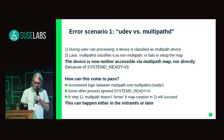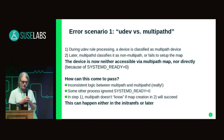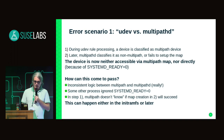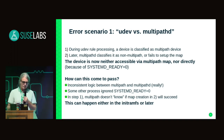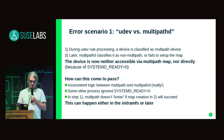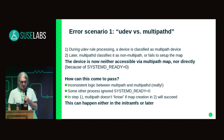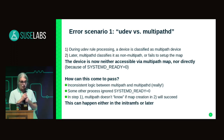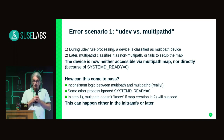That leads us to the error scenarios. Scenario one: UDEV versus multipathd. In the first step, UDEV rule processing, a device is classified as a multipath device. But later, multipathd classifies the device differently as non-multipath. Or it has the same opinion about the device, it tries to set it up but fails for whatever reason. Now the situation is really bad because this device is not accessible at all. It can't be accessed via the multipath map because that map doesn't exist, and it also cannot be accessed directly because the UDEV properties are set which prevent other subsystems from using the device.